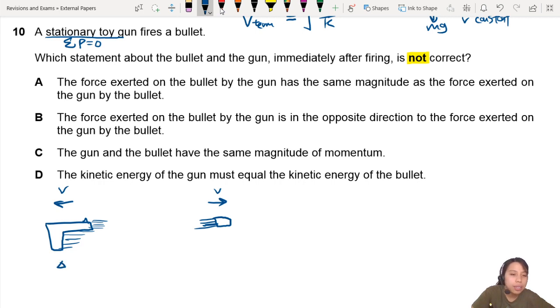And this gun will have a certain change in momentum. This bullet will have a certain change in momentum. Why? Because of a force. The gun pushed the bullet. The bullet pushed the gun backwards. Newton's third law. Equal opposite direction. Okay?